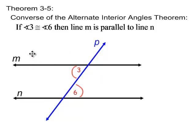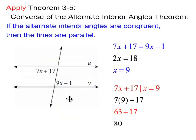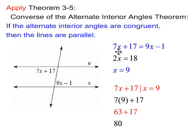Now we'll apply that idea. I have two expressions representing the measures of these two alternate interior angles, and they have to be congruent for these two lines to be parallel. Setting each expression equal to each other and doing the algebra: subtract 7x from each side to get 2x, add 1 to each side to get 18, then divide both sides by 2 — we get x equals 9.